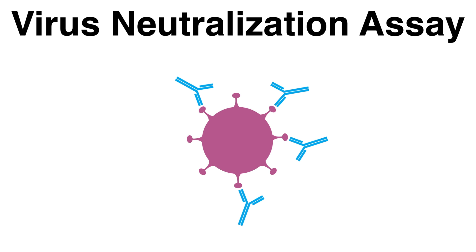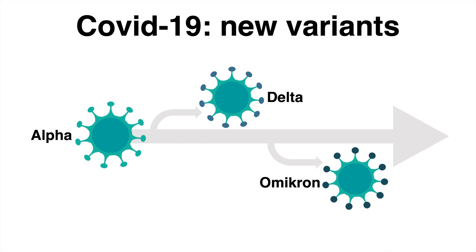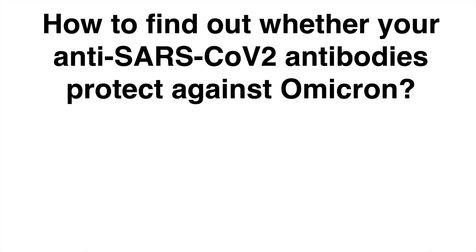Every once in a while during the last months, a new variant of the coronavirus was described, such as Delta or Omicron. Some of those were characterized by multiple mutations in the spike protein, and by that, those variants had viral surface modifications. Now we want to know whether the antibodies that we got from vaccination are sufficient to protect against those new variants.